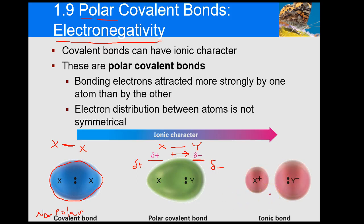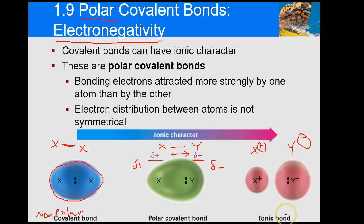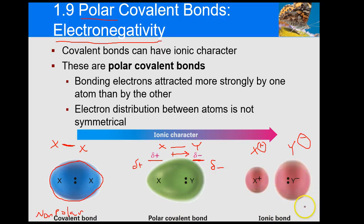Now imagine having a tug of war against the Broncos — we obviously know who's going to win. They just completely rip the electrons away, giving Y a full negative charge and X a full positive charge. That's an ionic bond — that's the extreme. So you have nonpolar with equal sharing, polar covalent with slight unequal sharing, and ionic where one atom completely rips the electrons away.